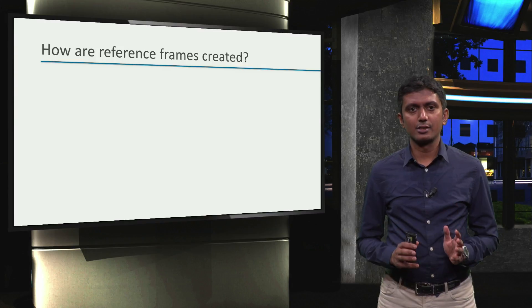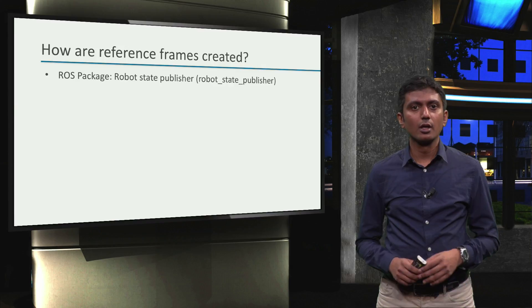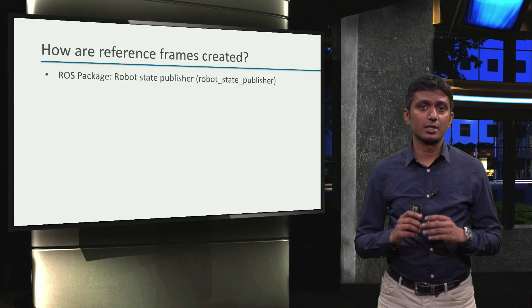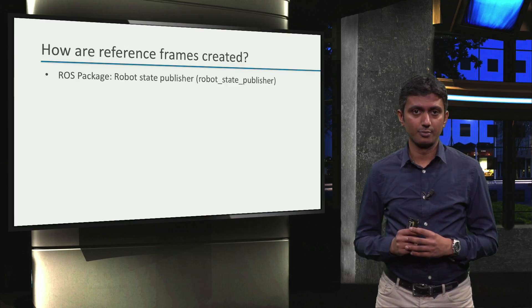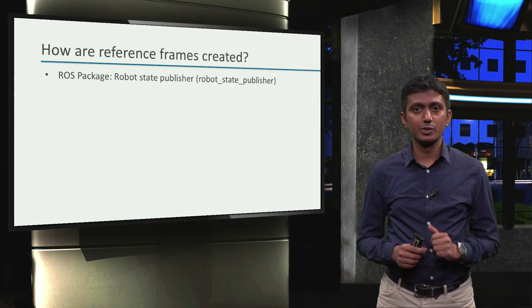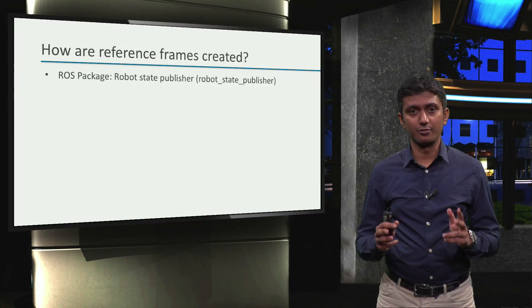First, let's understand how the TF reference frames are generated. The TF reference frames are generated and updated by the ROS package RobotStatePublisher. This package uses two sources of information to generate and keep track of reference frames.